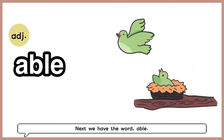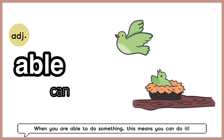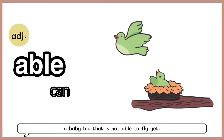Next, we have the word able. When you're able to do something, this means you can do it. This card shows a picture of a bird that is able to fly and a baby bird that is not able to fly yet.